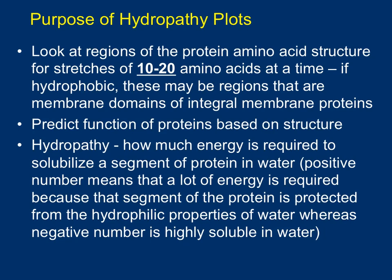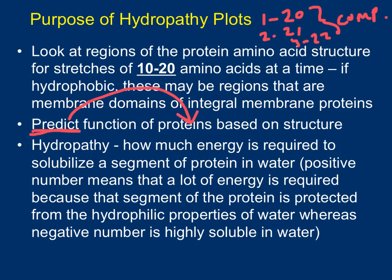The Kyte-Doolittle hydropathy plot analyzes regions of 10-20 amino acids at a time. It takes amino acids 1 to 20, calculates the energy required, then shifts to 2-21, 3-22, all the way through the entire protein. A computer program does this calculation based on the number of hydrophilic and hydrophobic amino acids in any window of 20. This gives a prediction of structure, which allows you to predict function. If a protein has no transmembrane domains, it might be a cytosolic or extracellular protein — perhaps a hormone or a molecule important for movement.